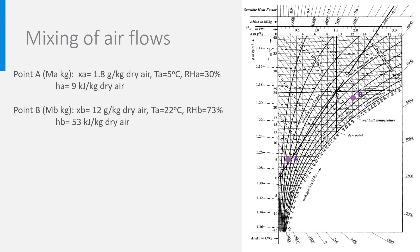Sometimes two flows of humid air with different properties need to be mixed. It can happen in recirculation systems where, to save energy, indoor air is mixed with outdoor air. Be aware that mixing clean outdoor air with indoor air may be unwise from a hygiene perspective — think of the circulation of viruses like COVID-19. Having said this, let's look at how air mixing works.